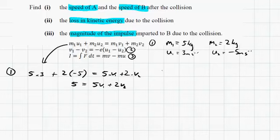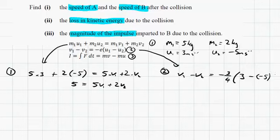So 15 minus 10 would be 5 equals 5 v1 plus 2 v2. Now from equation 2 then, we have v1 minus v2 equals the coefficient of restitution, which is 3 over 4, times u1, which is 3, minus, and I'm going to put brackets around this because it's very easy to forget that minus sign there.